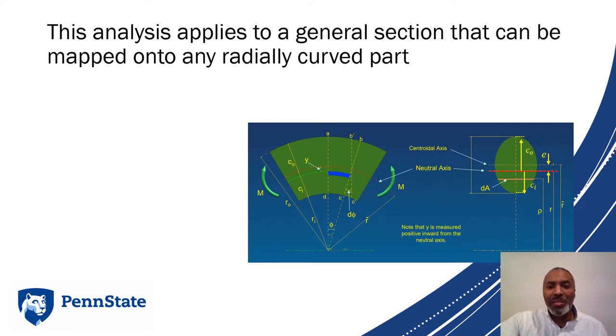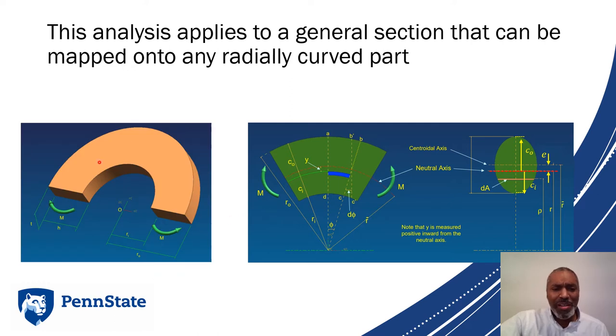The analysis we'll run through today applies to a general section that can be mapped onto any radially curved part. We have some cross section, that cross section is of a beam, and that beam can have some curvature to it that's applied by some pure moment. The analysis applies to a section on that beam, and whatever we generate is applicable to the entire body.